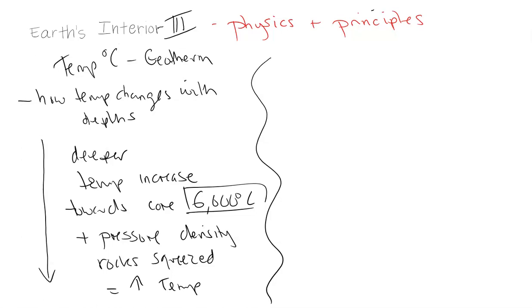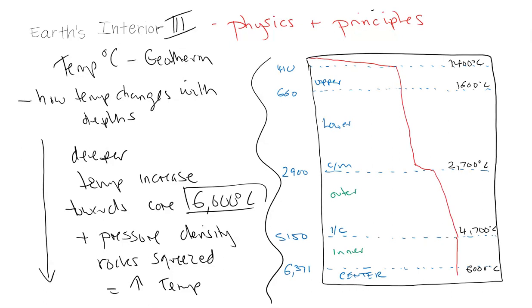We can look at the geotherm and see that there are distinct changes in the temperature at certain depths. As you can see on the right-hand side here, I've drawn this very basic geothermal gradient from the surface, which is up here, down to the earth's center, which is down here, roughly 6,371 kilometers. This is all kilometers beneath the surface.